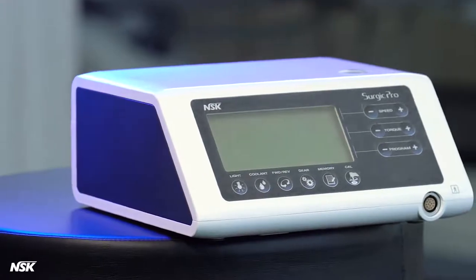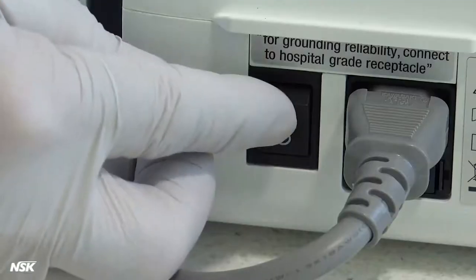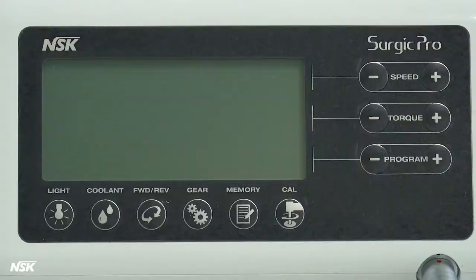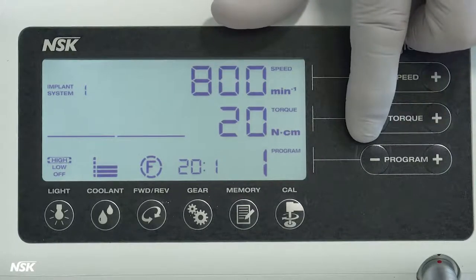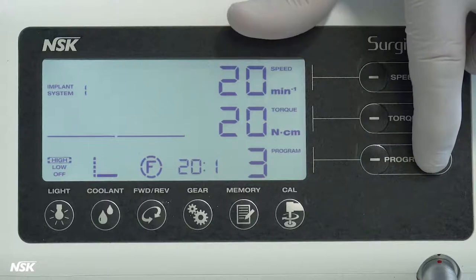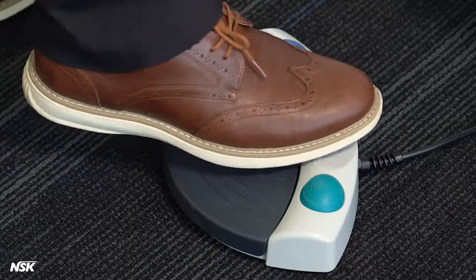Operation: Let's show how to operate your Surgic Pro. First, turn on the power using the main power switch. Select the desired preset program number by pressing the plus or minus on the panel, or the black button on the foot control.